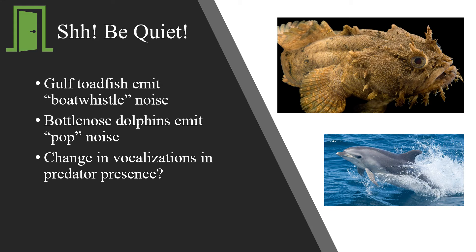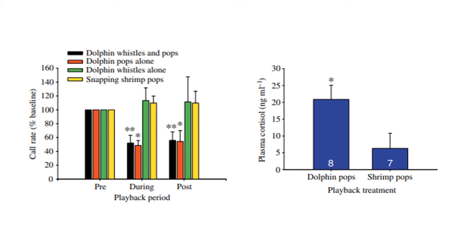Mainly, these researchers analyzed these behaviors on a proximate level, focusing on the various stimuli that can cause immediate changes in behavior. The researchers found that male toadfish exposed to the popping sounds dolphins emit while foraging, either on its own or in combination with whistles, decreased their call rate by about 50%. You can see this in the black and the red bars, specifically in the 'during' section of the first chart compared to the 'pre' section. This decrease in call rate was also maintained for five minutes after exposure to the pops, which is seen in the black and red bars in the 'post' section of the first chart. The whistle noises alone, shown in green, or the control sound, shown in yellow, was not enough to trigger this call rate decrease.